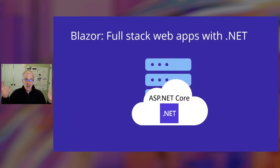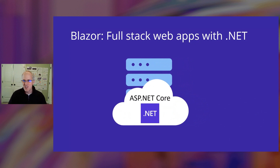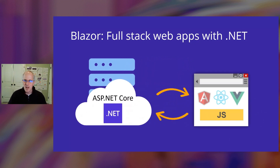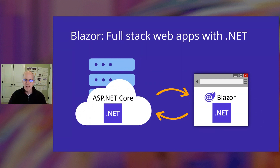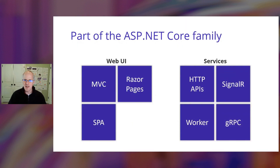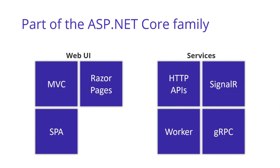Over four years ago, Blazor was introduced to the open source community as a way to build full-stack web apps with .NET, no JavaScript required. With Blazor, you can use .NET to build rich, interactive web UI components based purely on open web standards — HTML, CSS, and WebAssembly. Blazor is part of ASP.NET Core, your modern unified .NET web framework.